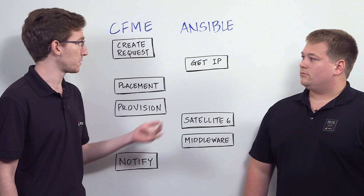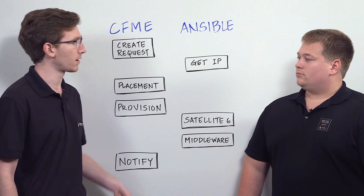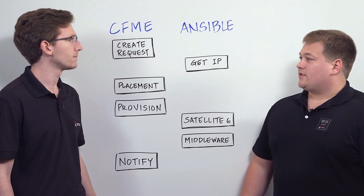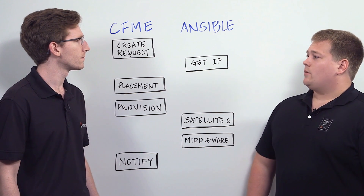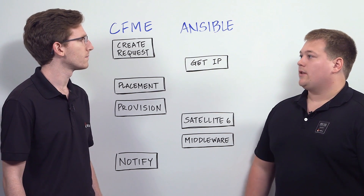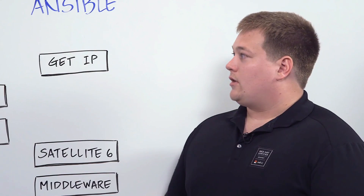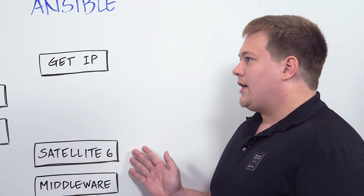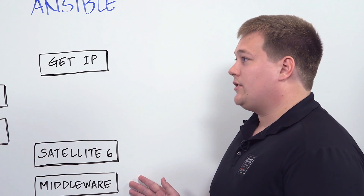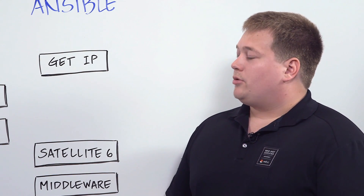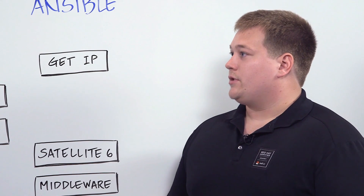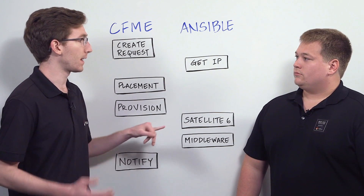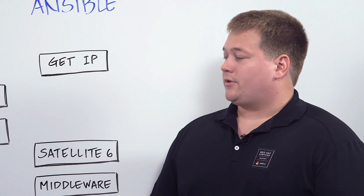You can also see it going the other direction, where you start off with Ansible and then introduce CloudForms into an environment. Places are using Ansible or Ansible Tower and have existing workflows and playbooks already running, but now they want to bring in CloudForms because they want the manager of managers, the reporting, and the holistic picture of their entire infrastructure and cloud. You can create the request, get an IP address, do placement and provisioning, and then after the VM comes up, register it with Satellite 6, deploy middleware such as JBoss on that virtual machine, and then notify the user. In one place, the user clicked the order button one time and they've got a virtual machine that's ready to go. Clients could already have a Satellite 6 playbook and just drop that right into their existing workflow without any changes.